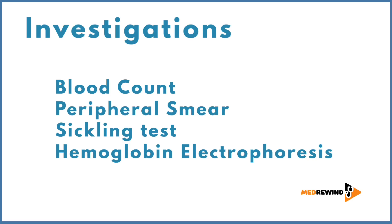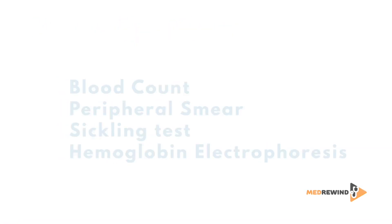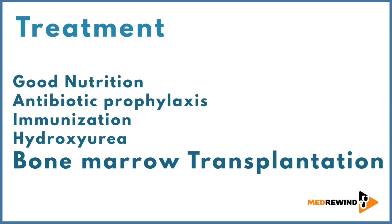Treatment includes general measures such as good nutrition and folic acid supplementation in all patients with hemolysis. Antibiotic prophylaxis should be started at age two months using penicillin or cephalosporin. Immunization is done against Streptococcus pneumoniae, Neisseria meningitidis, Haemophilus influenzae B, and Hepatitis B virus. Hydroxyurea is used as therapy for patients with severe symptoms. Bone marrow transplantation is recommended for children and adolescents younger than 16 years with severe complications.